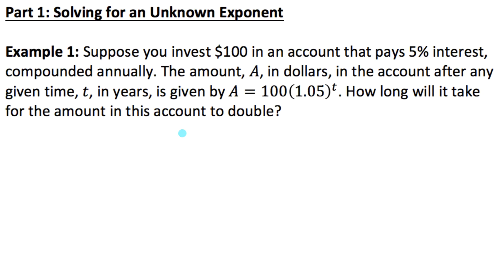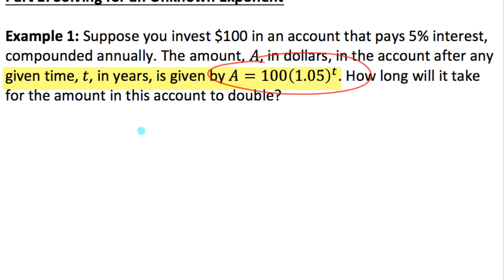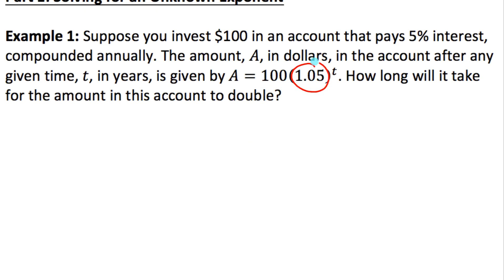Example one: suppose you invest a hundred dollars into an account that pays five percent interest compounded annually. The amount A in dollars in the account after any given time t in years is given by this function. How long will it take for the amount in this account to double? It starts at 100 with five percent interest once a year — how long until that 100 doubles? I'll set the equation equal to 200.